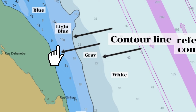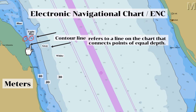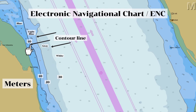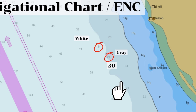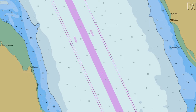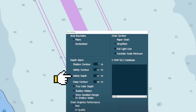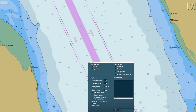If we look at the spot sounding on both sides of this contour line, the spot sounding in the blue shaded area is 9 meters and 10.8 meters in the light blue. It means that this contour line is showing an equal depth of 10 meters. On the other side of the traffic lane, in the gray shaded area, the spot sounding is 27 meters and on the white is 31 meters, meaning this contour line shows an equal depth of 30 meters. There are safety parameters that need to be determined and set in the ECDIS before making a passage plan: shallow contour, safety contour, safety depth, and deep contour.